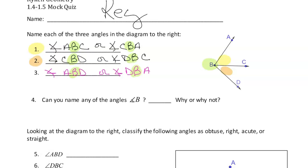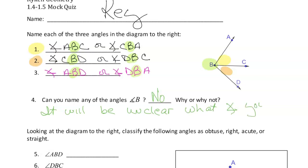Can you name any of the angles just angle B — why or why not? The answer is no, you cannot, because it will be unclear what angle you are speaking about. Every single one of those angles named in numbers one, two, and three have the same vertex of B. So you can't name it just angle B; you've got to use three letters.